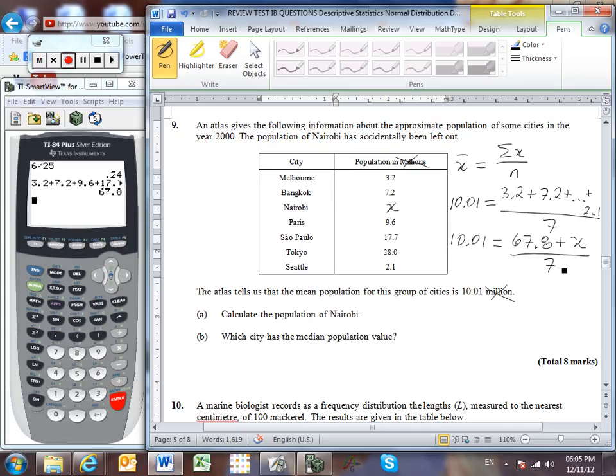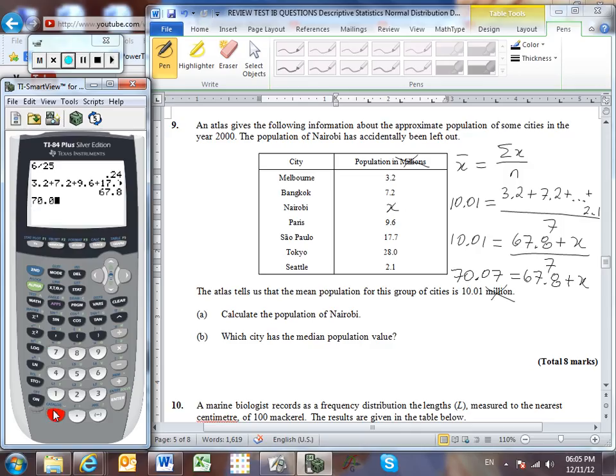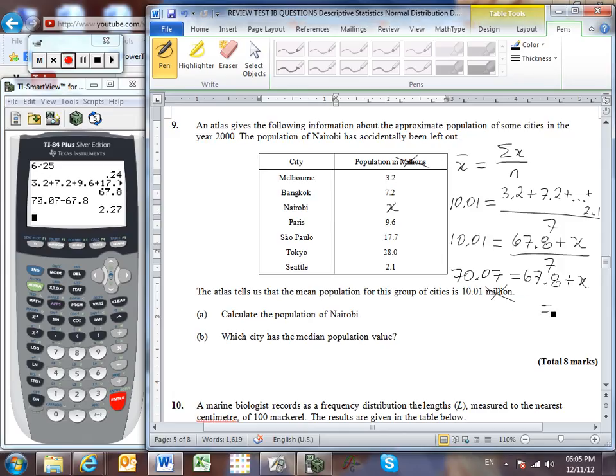Well, in order to isolate x, we're first going to need to multiply both sides of the equation by 7. And then to get x alone, we'll need to subtract 67.8 from both sides. 70.07 minus 67.8 gives us an answer of 2.27. And so, 2.27, let's add on now the word million. The population in Nairobi then is 2.27 million.